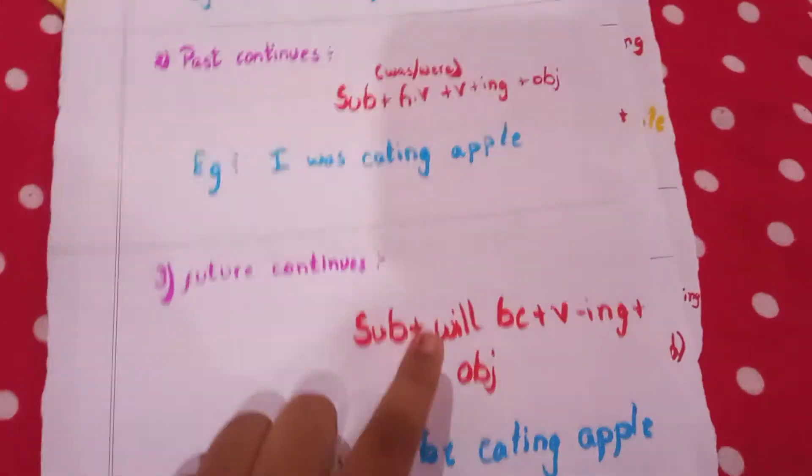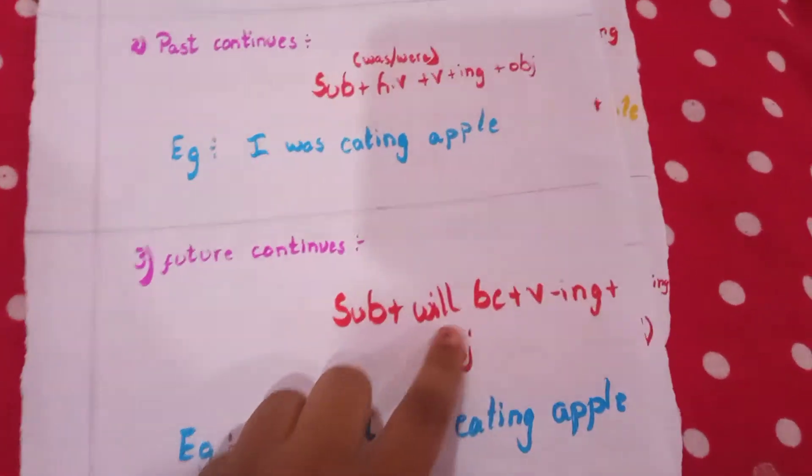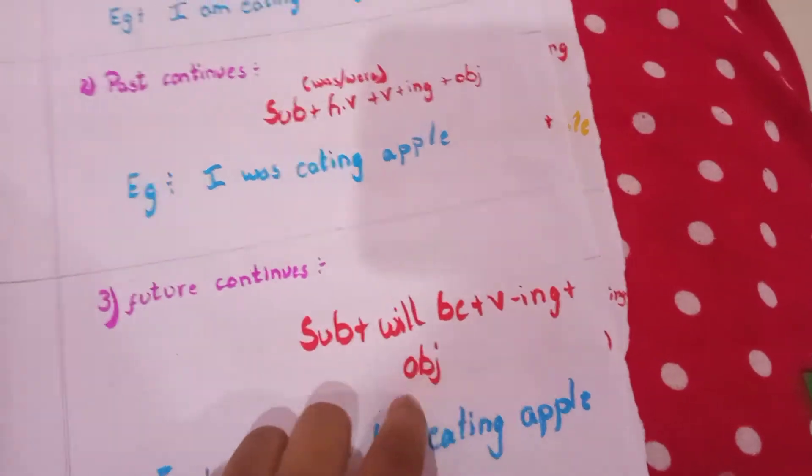Future continuous: subject plus will be plus V4 plus object.